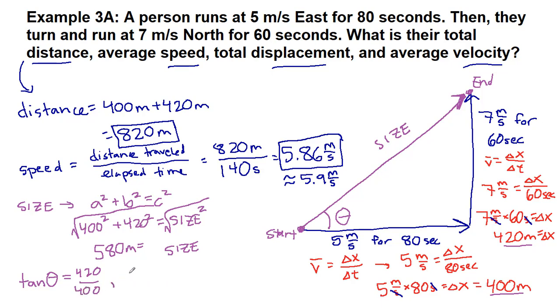To get the angle by itself, we have to use the arc tangent or inverse tangent button on our calculator. It looks like tangent to the negative first. And then we can plug all of that into our calculator. And we get 46.4 degrees or 46 degrees. Both are good.